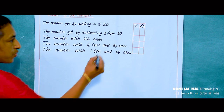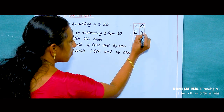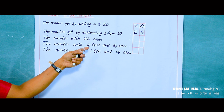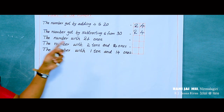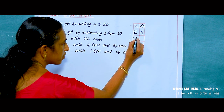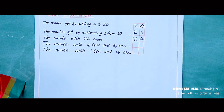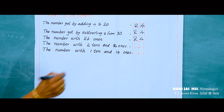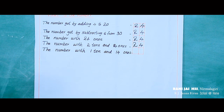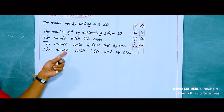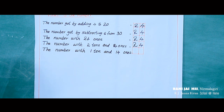Look at the third one: the number with 24 ones. We know that 24 ones make 24, so the answer is 24. Then the next question: the number with 2 tens and 4 ones. What is the answer? Yes, 24. Then the last question: the number with 1 ten and 14 ones. We learned that 1 ten and 14 ones means 24.